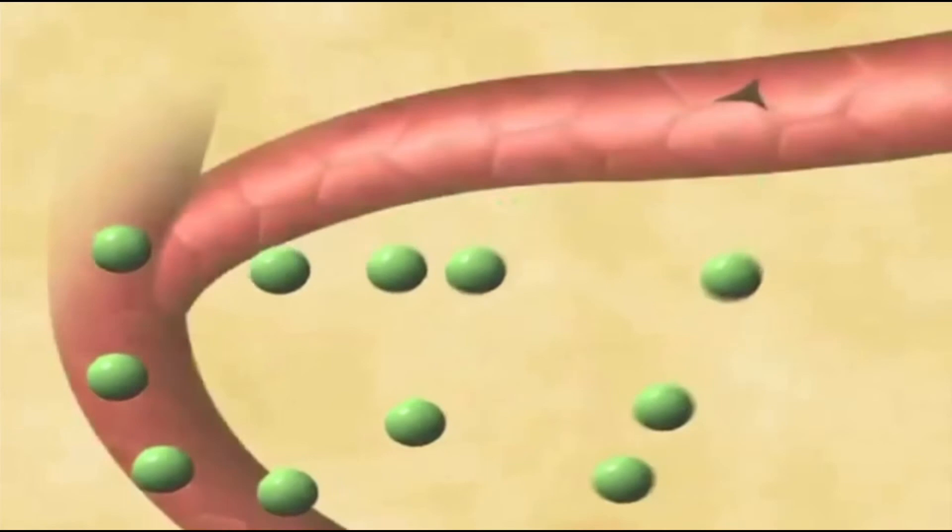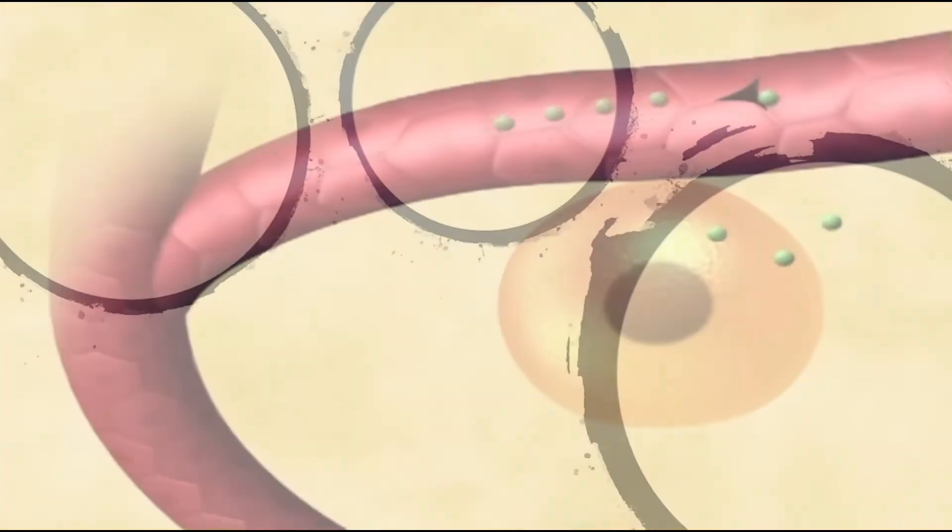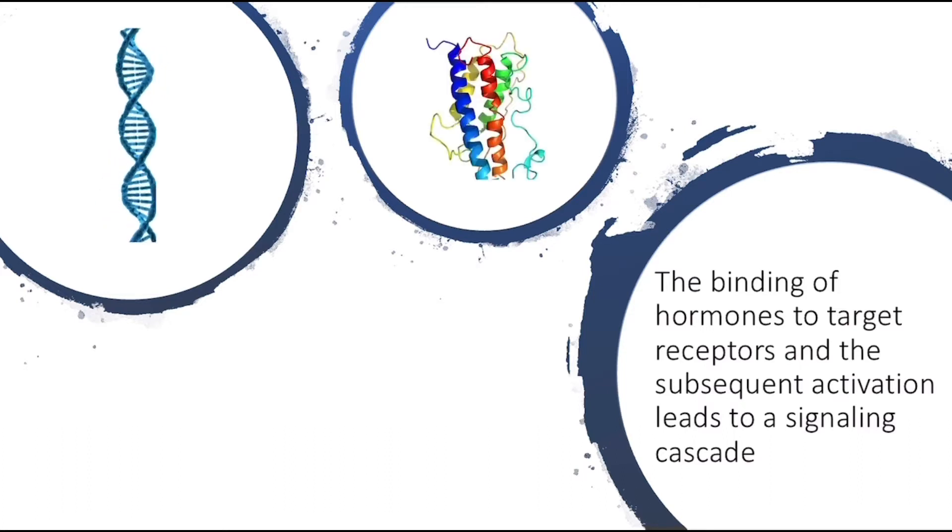Hormones are produced and secreted by glands when stimulated which will then move through the blood until they come in contact with specific receptors on or in target cells. The binding of hormones to target receptors and the subsequent activation leads to a signaling cascade that ends with the desired effect, be it activation of a set of proteins or gene expression.